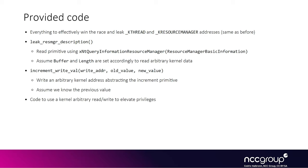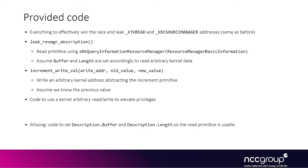We also provide the code for using the arbitrary read primitive and the arbitrary write primitive to parse kernel structures such as the k-process, so we can find the system token and patch our own process to hold that system token, which gives us higher privileges so we can spawn a shell. Most of the features are already implemented, but we are missing how to use the increment primitive to set the buffer and length fields of the k-resource-manager description field so we can use the `leak_resource_manager_description` function and get kernel data back.